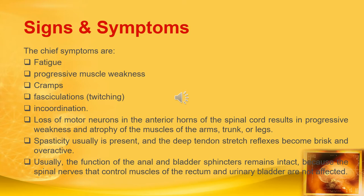Spasticity is usually present, and deep tendon stretch reflexes become brisk and overactive. Usually the function of the anal and bladder sphincters remains intact because the spinal nerves that control muscles of the rectum and urinary bladder are not affected.